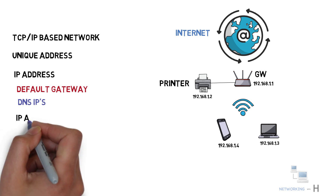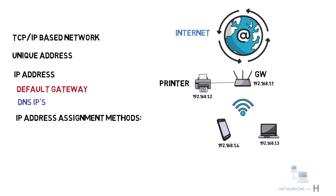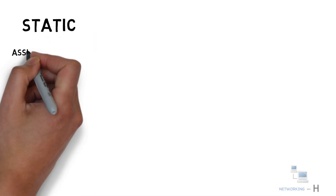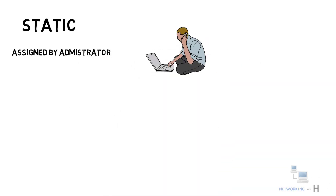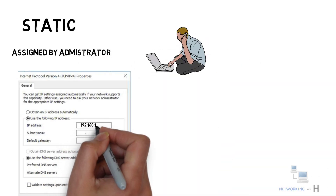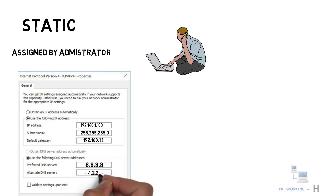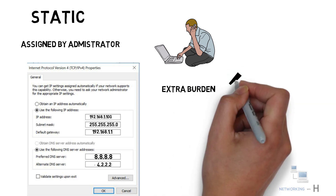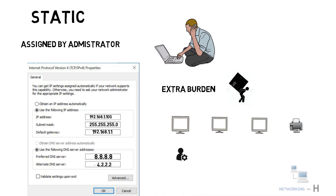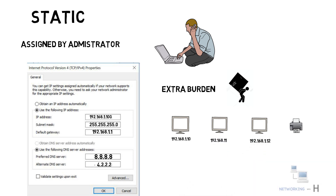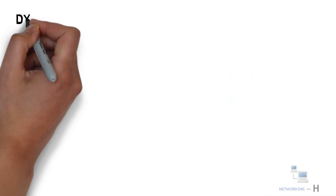There are two basic IP address assignment methods: static and dynamic. In the static method, an IP address is statically assigned to a device by the administrator. The administrator configures the IP address, subnet mask, default gateway, and DNS servers manually. Static address assignment is an extra burden for the administrator, especially on large-scale networks, as the administrator must configure the address on every end system manually.